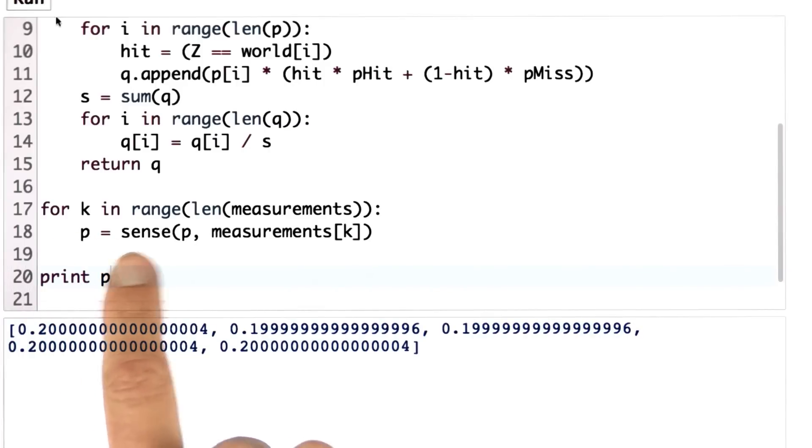And the modification is simple. We will call the procedure sense multiple times, in fact as often as we have measurements, which is the for loop over here. We grab the kth measurement element and apply it to the current belief and then recursively update that belief into itself.